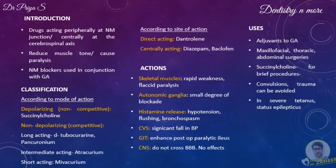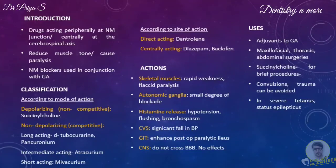The ganglionic blocking activity of competitive blockers may enhance post-operative paralytic ileus after abdominal operations. This action is useful because it reduces bowel motion after abdominal surgery. On the CNS, all neuromuscular blockers are quaternary compounds, which means they do not cross the blood-brain barrier and hence have no CNS side effects.